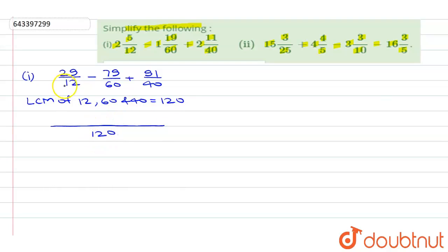When we divide 120 with 12 we'll get 10, so here we'll get 290 minus. When we divide 120 with 60 we'll get 2, 79 times 2 is 158 plus, 3 times is 120. So we have to multiply numerator with 3, we'll get here 273. While solving, first we have to add both the values then subtract.